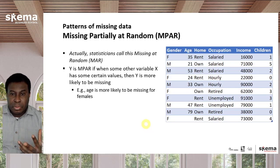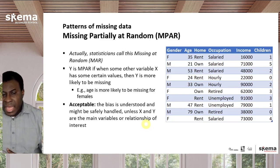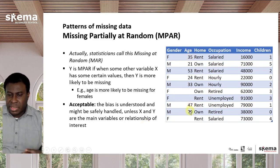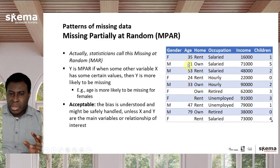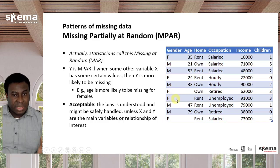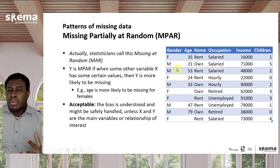Is this a problem? Generally, this is an acceptable kind of randomness as long as you understand that it is biased. You can deal with missingness in the ways we'll see, with one exception: because you know the missingness in age is related to the gender value, you are not able to determine any relationship between gender and age — that relationship will be biased. You can do other things with age once you deal with the missing values, as long as the analysis is not directly related to gender.